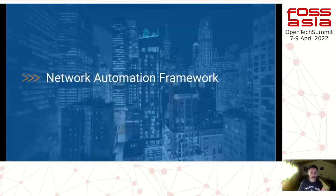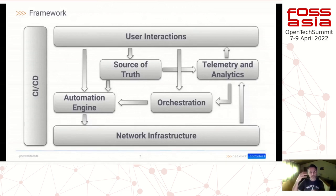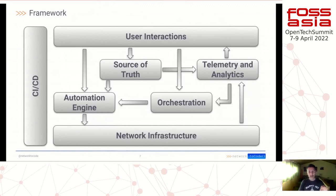So we start with the network automation framework. This is not rocket science, but it really helps everyone understand what we are talking about. We define our framework in seven different components. At the bottom layer is network infrastructure. At the top is the user, who starts and controls the whole automation. In the middle are different pieces: source of truth, telemetry, and orchestration — we'll go through each one by one. On the left side, we have the CI/CD process. We must not forget that this is network automation, but it is also a software development project, so any tooling used for developing applications today can be applied here.